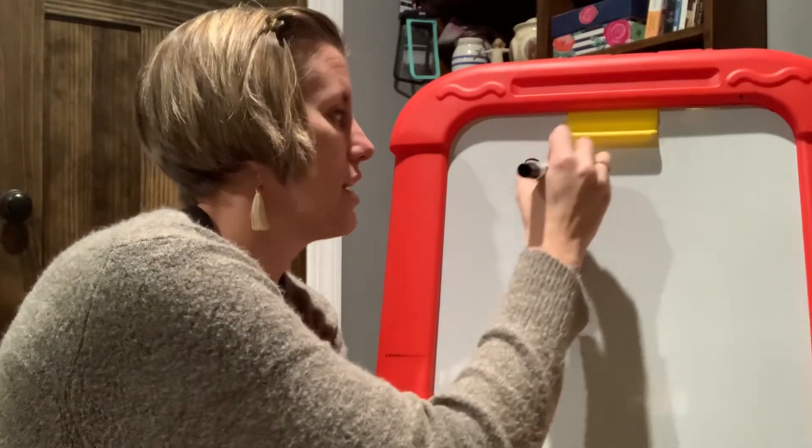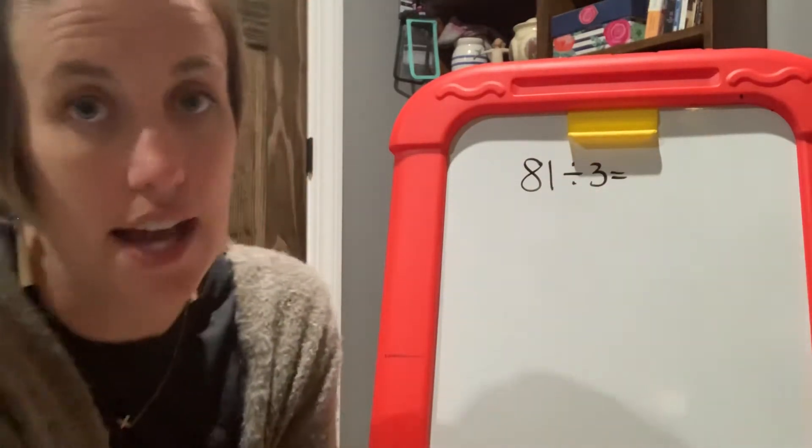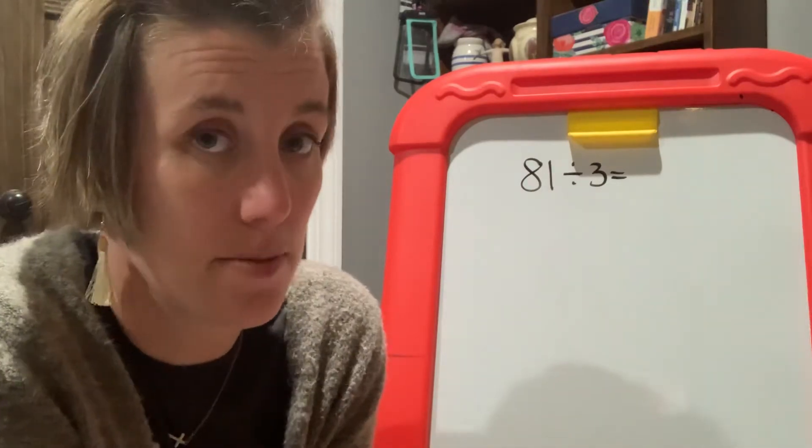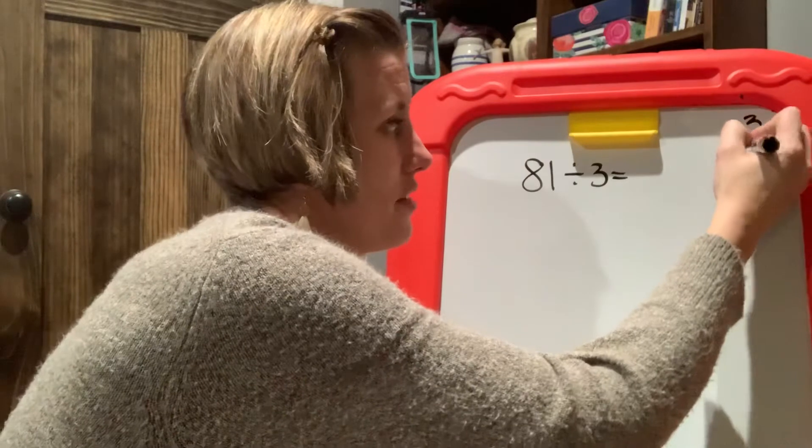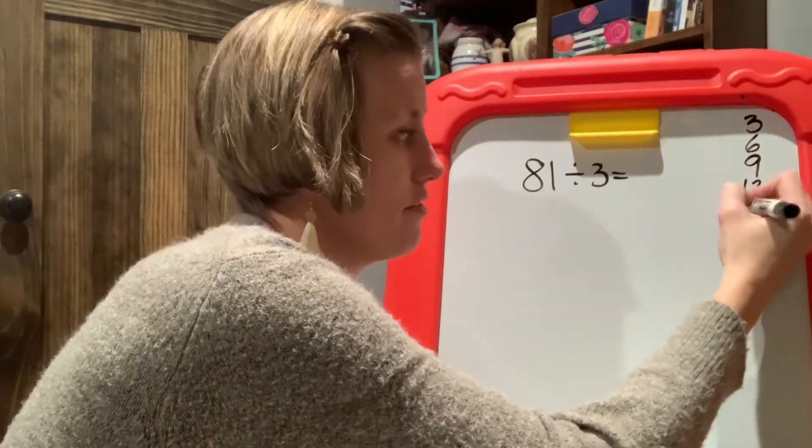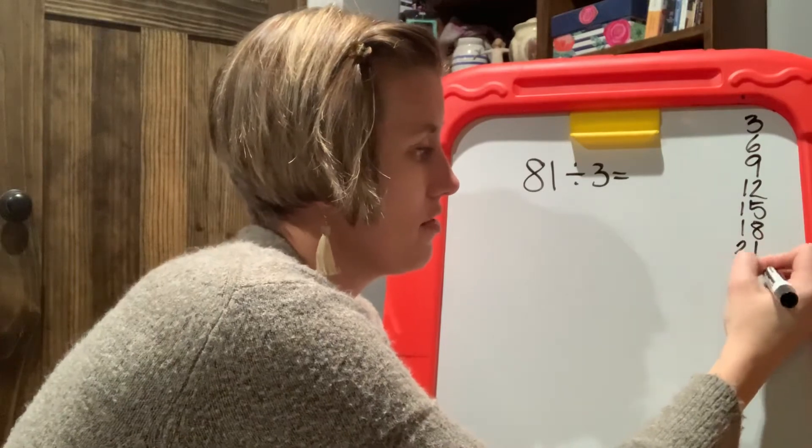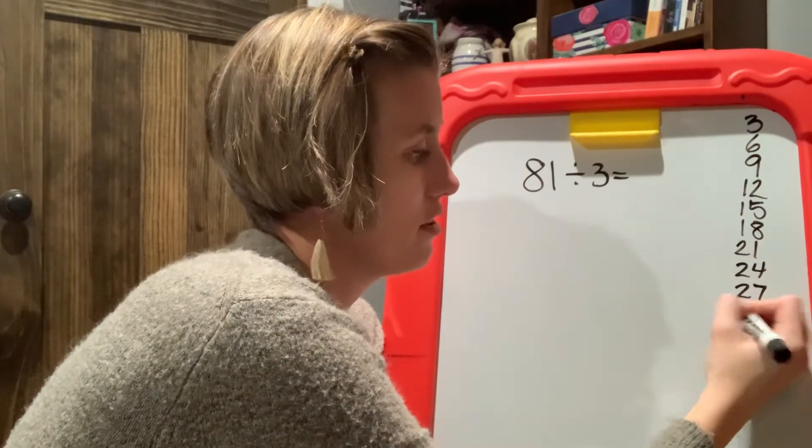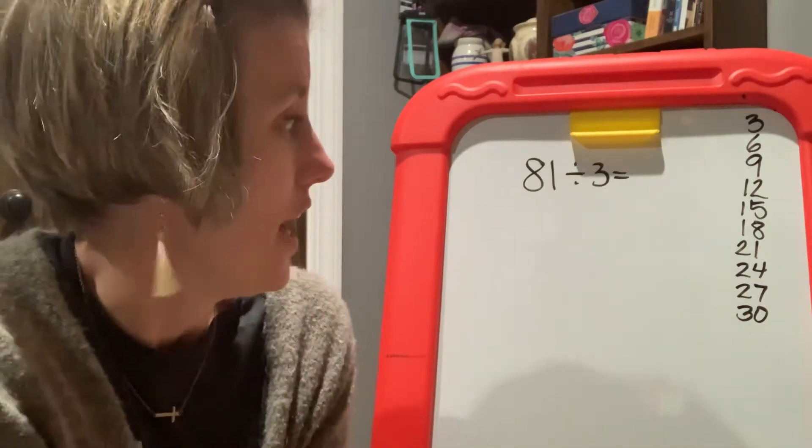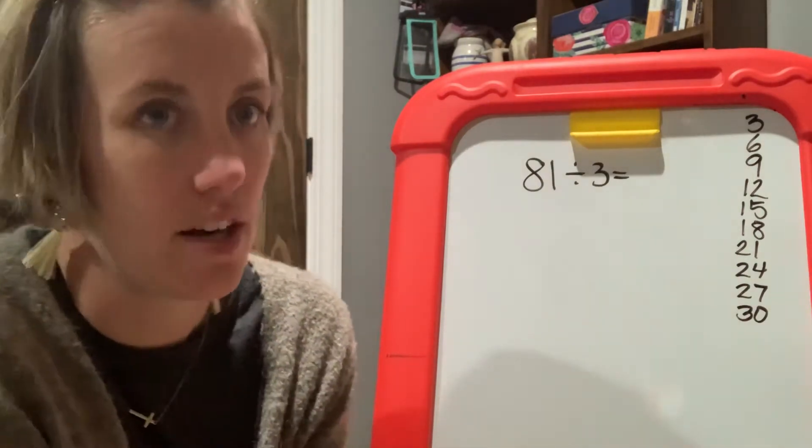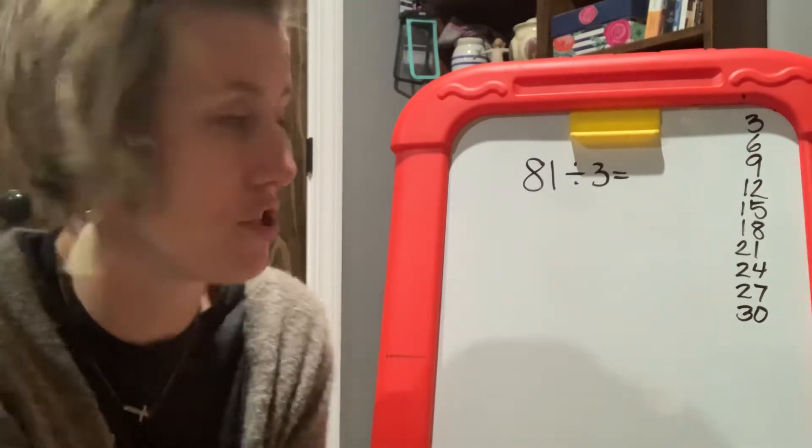Let's do 81 divided by three. Now in my previous video, I told you to list multiples. Great strategy. Let's just do it just because I love it. Three, six, nine, 12, 15, 18, 21, 24, 27, 30. We could go on, but we're going to stop. And I did that for a reason, which you'll see later. Always, always, always list your multiples when you are doing division.